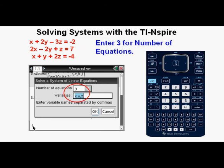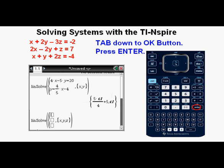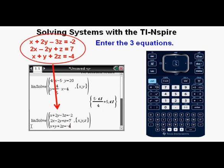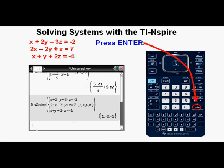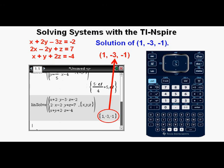When we change the number of equations to 3, the variables become x, y, and z. Tab down to the OK button and press enter. Enter the three equations. Press enter. Our solution is 1 comma negative 3 comma negative 1. So x is 1, y is negative 3, and z is negative 1.